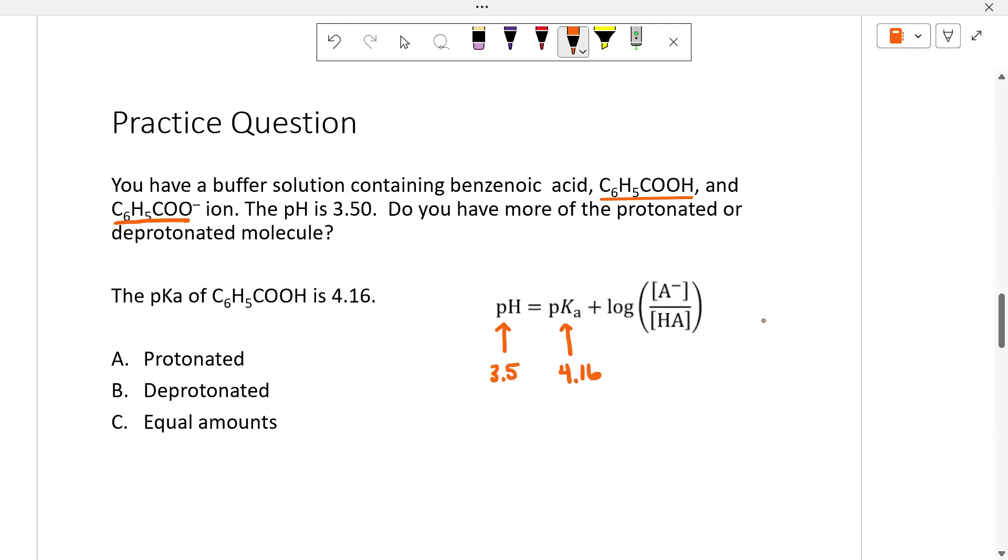When I look at that, I know that this, mathematically, I need this to give me a negative number to make my math work, which means that this piece right here must be a decimal. It's got to be a number less than one. So that tells me that I must have more of the protonated version. The denominator must be bigger.